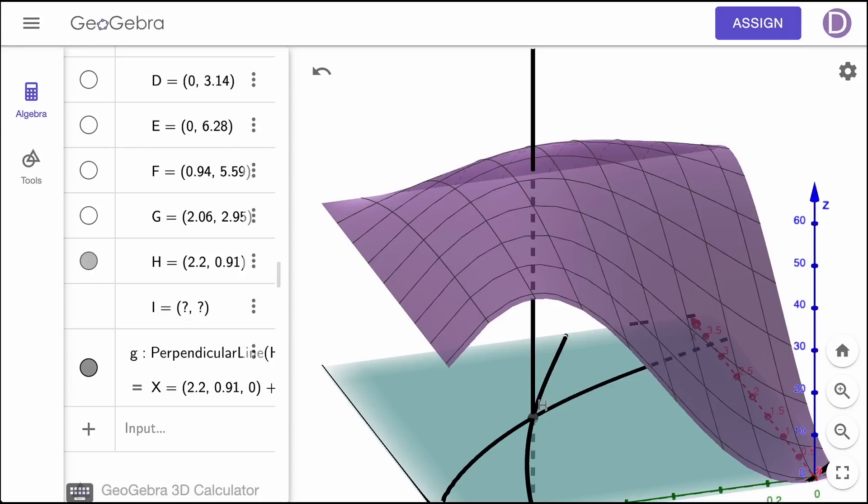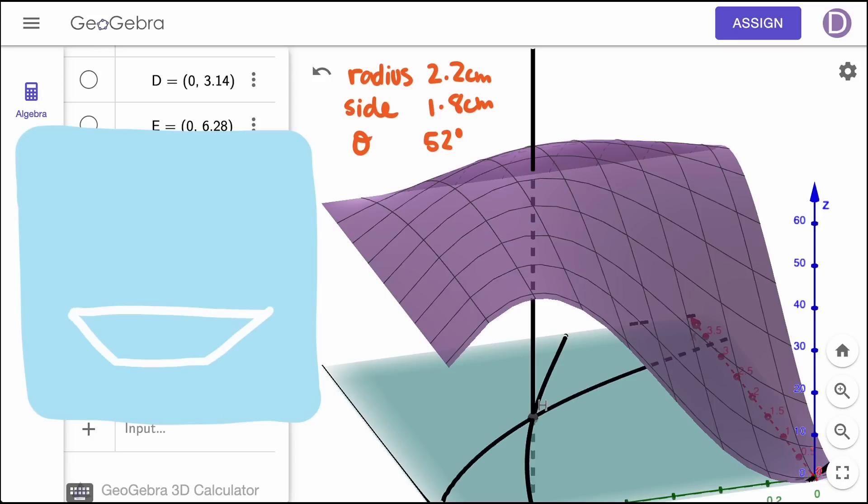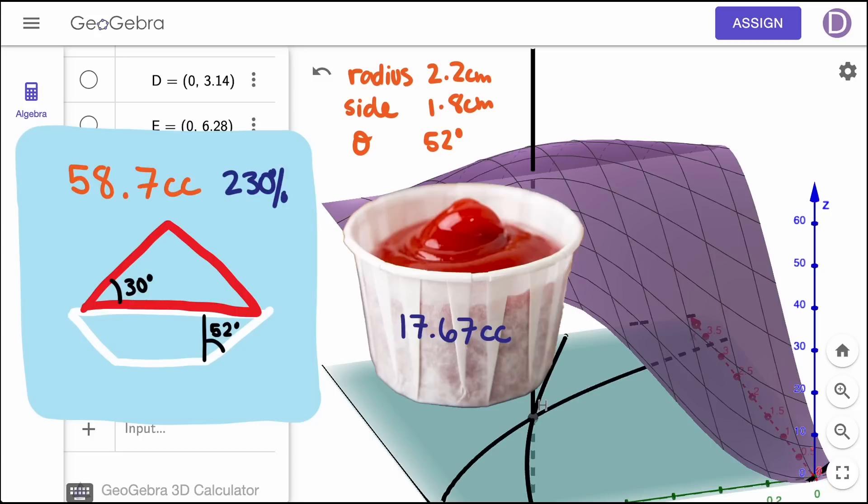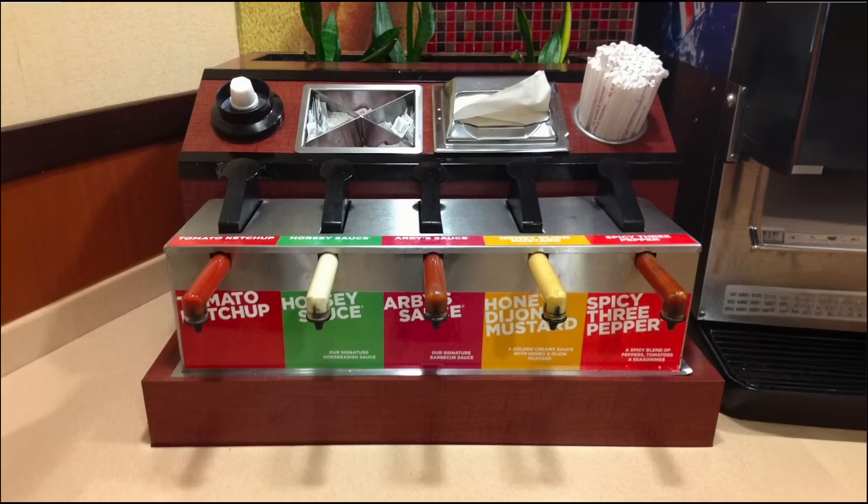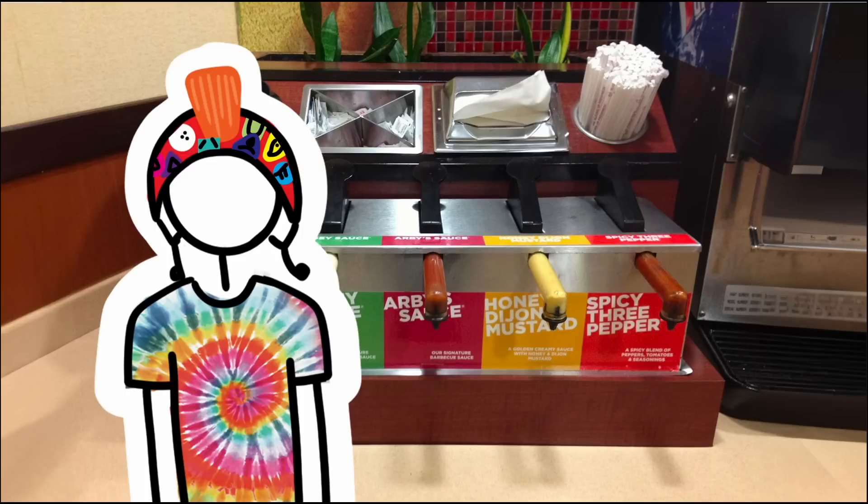The optimum design changes with our cone top with a radius of about 2.2 centimeters now and a side length of 1.8 centimeters and an optimal angle of about 52 degrees. That is open a lot more than the previous cups because a wider opening adds so much to the volume of the cone top. This gets us a total volume of about 58.7 cc's. That's 230% more than the original cup filled to the brim. That just saved us multiple trips to the condiment counter and we just earned another sticker for our nerd helmet.